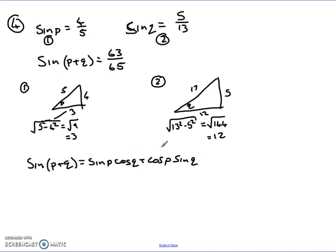This one's given by sine of P cos Q plus cos P sine Q. So what I need to do is I need a value for sine P, cos Q, cos P and sine Q. Well, I've got my sine P and my sine Q, what I need is my cos Q and my cos P. Well, I have my triangles with the exact values, so now I can get those.